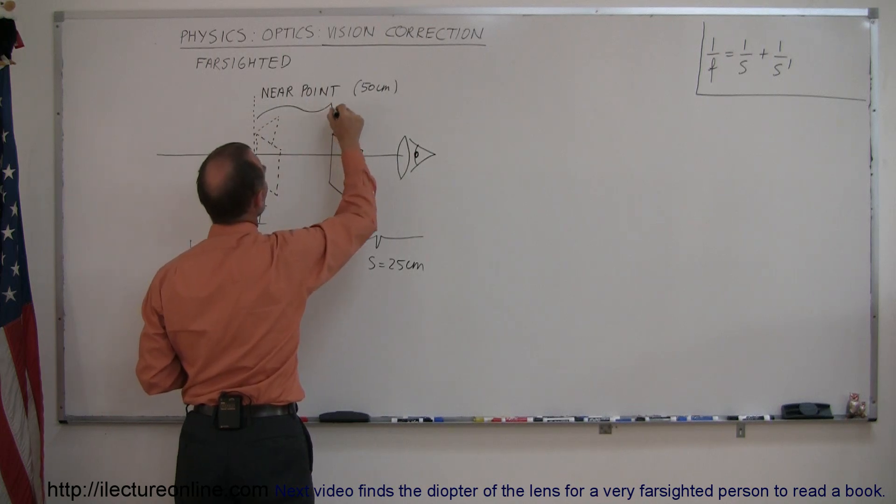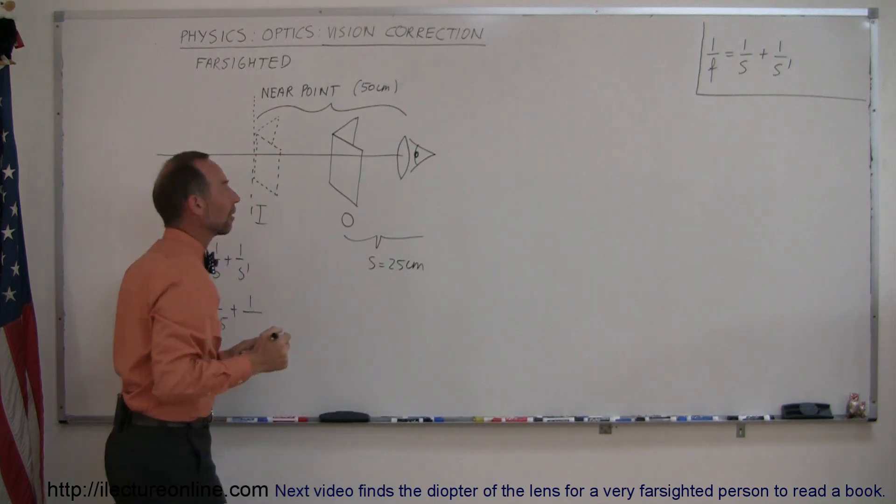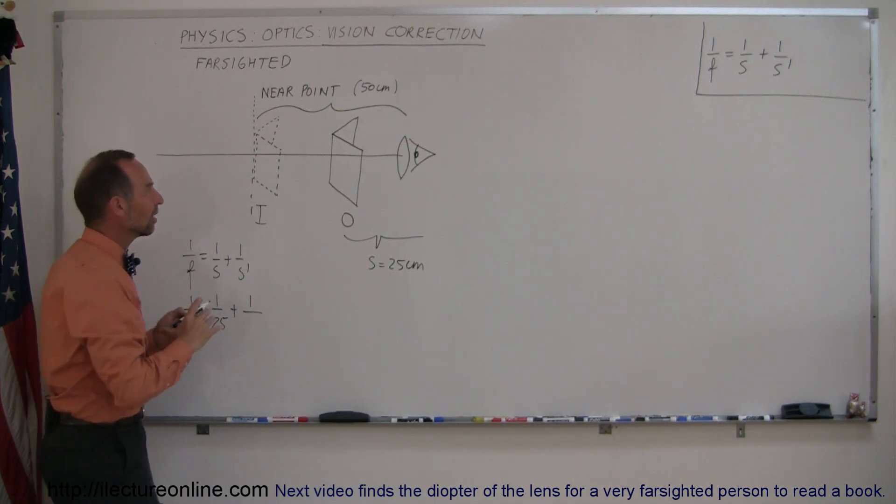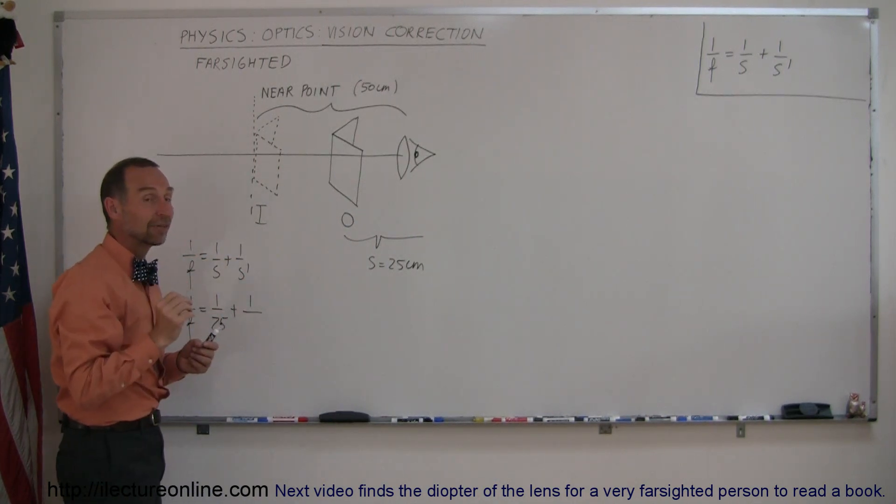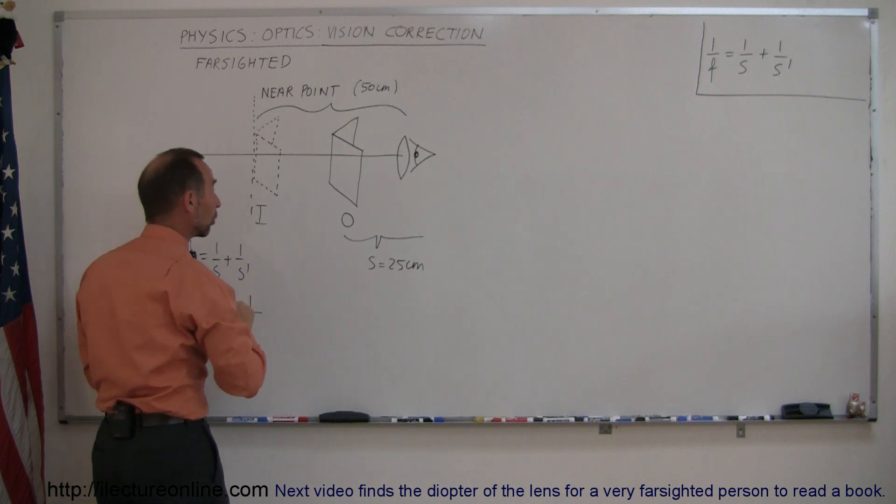Let's say your near point is 50 centimeters away. That means your image distance needs to be 50 centimeters away from the lens, but of course since the image is in front of the lens, that means it's a negative image distance. It's a virtual image.